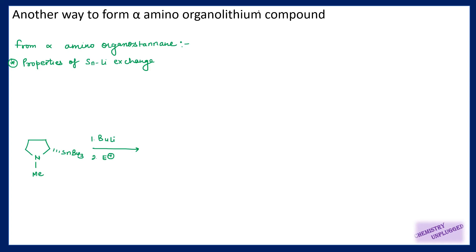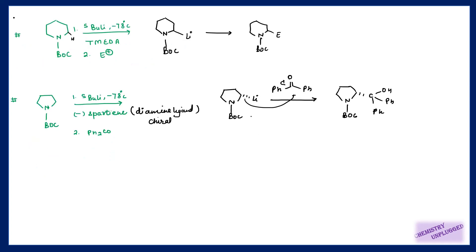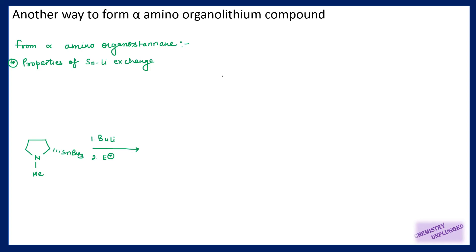Next is another way to form alpha-amino organolithium compounds. We have seen reactions of how we can generate alpha-amino organolithium compounds, and then we are using these alpha-amino organolithium compounds. In this approach we have an organotin group attached at the alpha position, and these compounds can show tin-lithium exchange — meaning this tin group will simply be replaced by lithium.